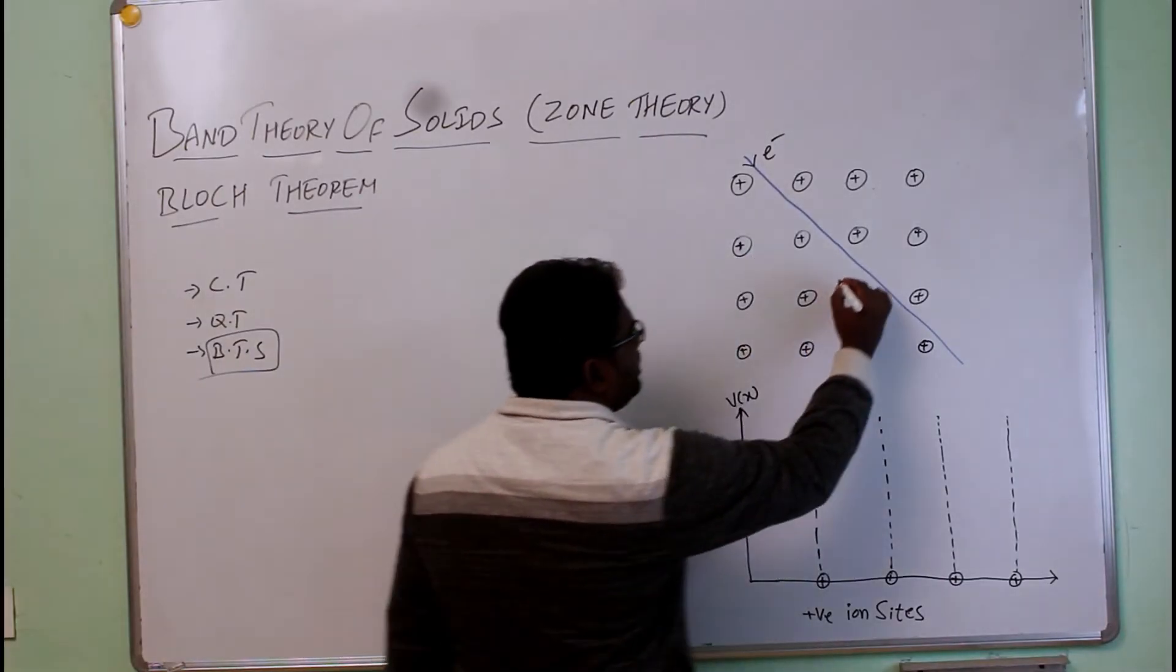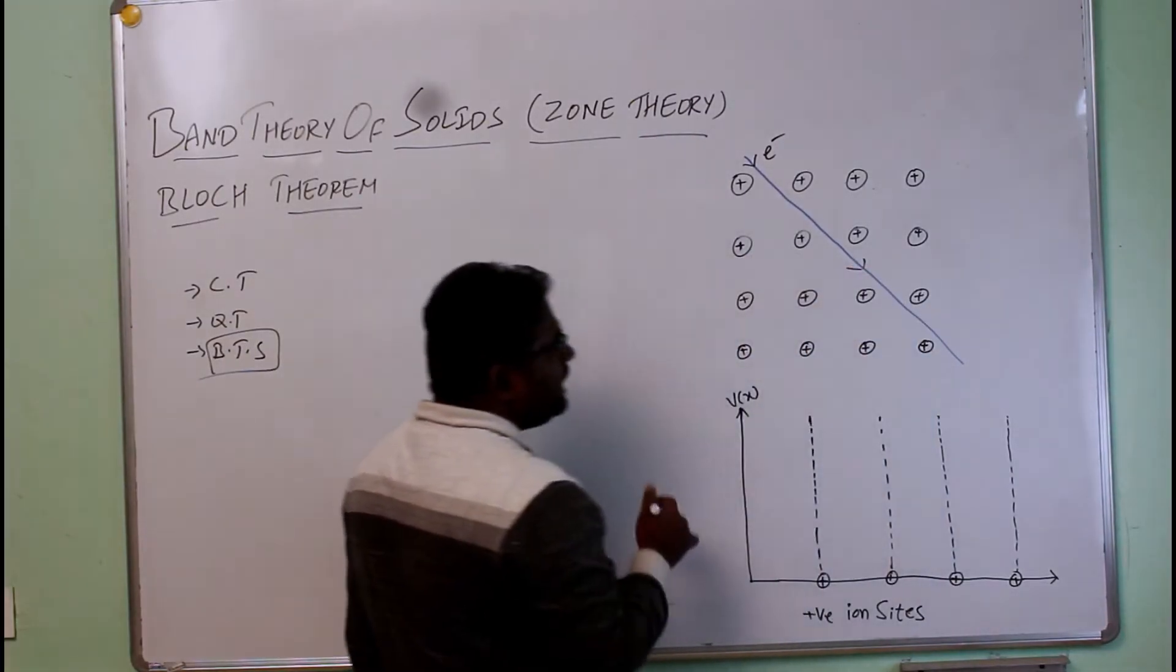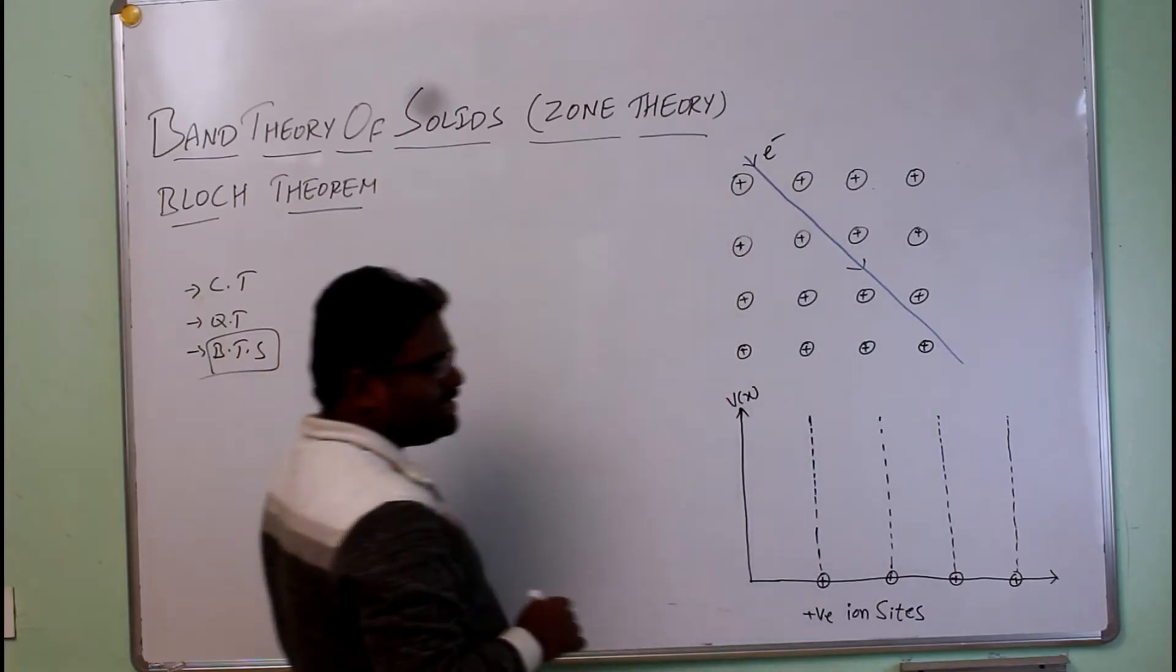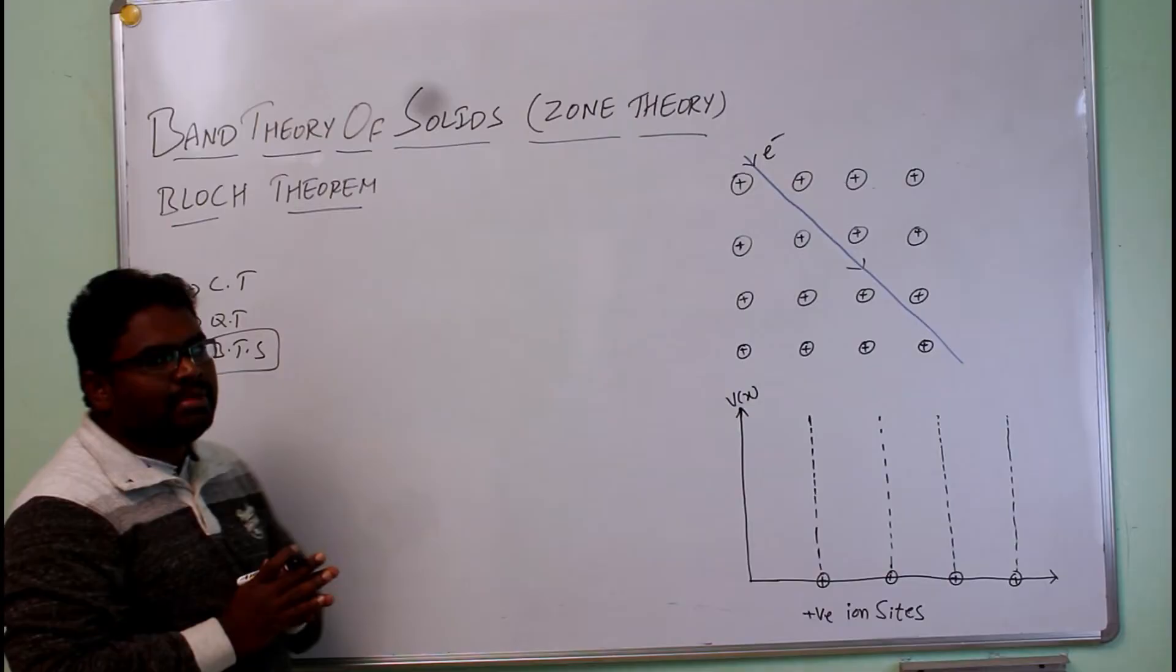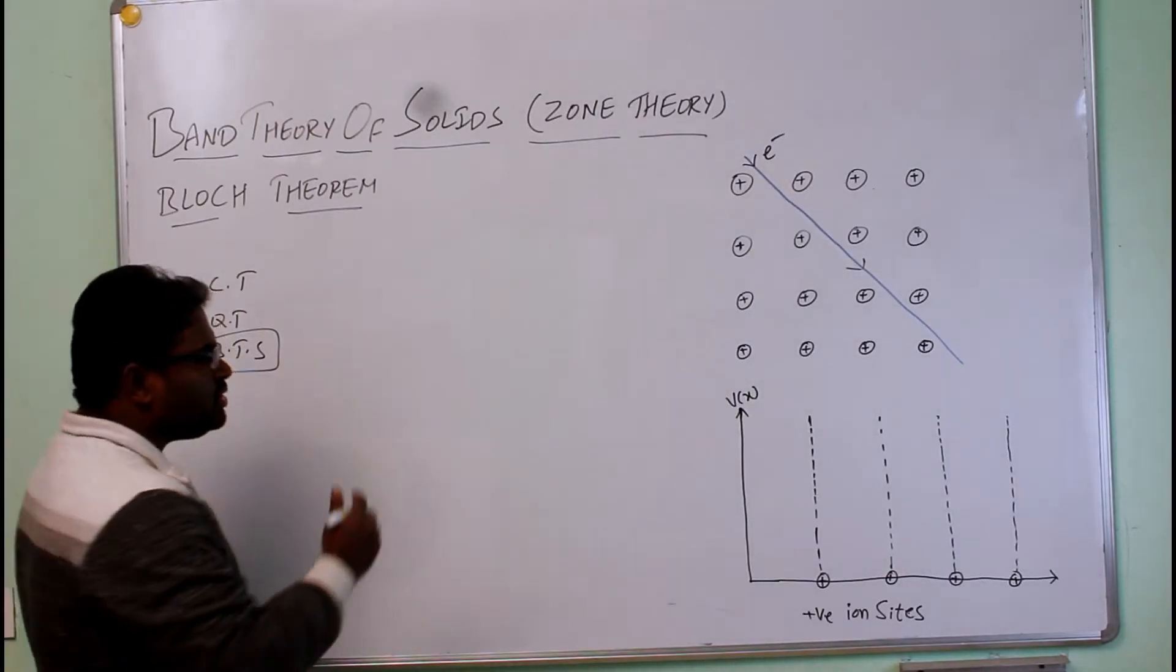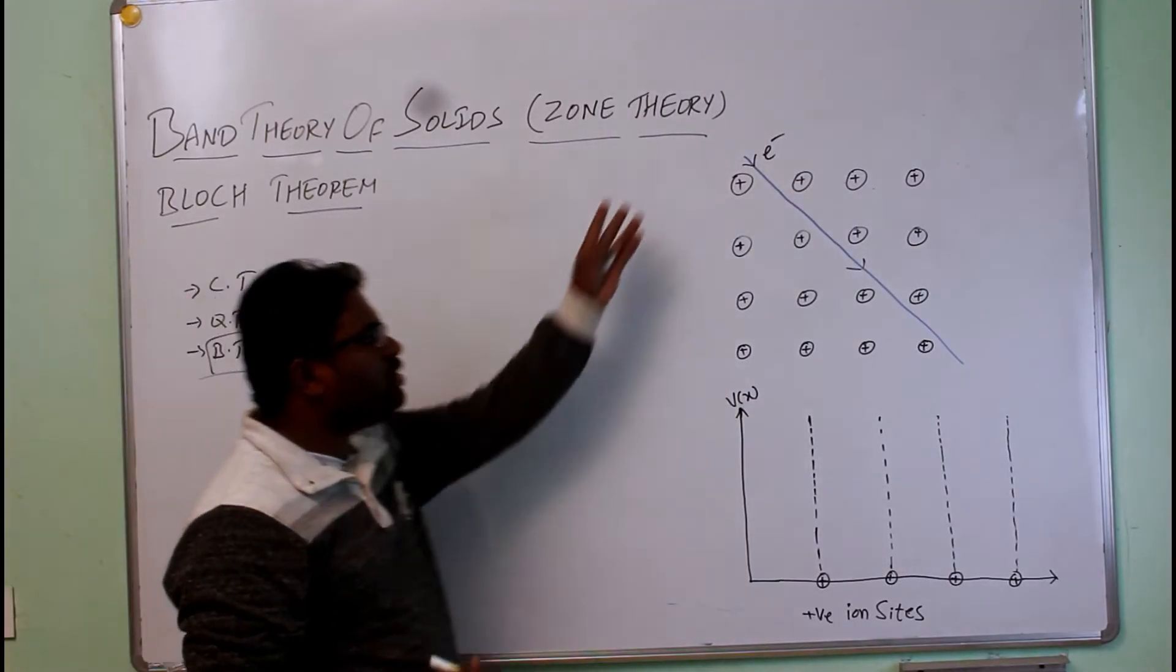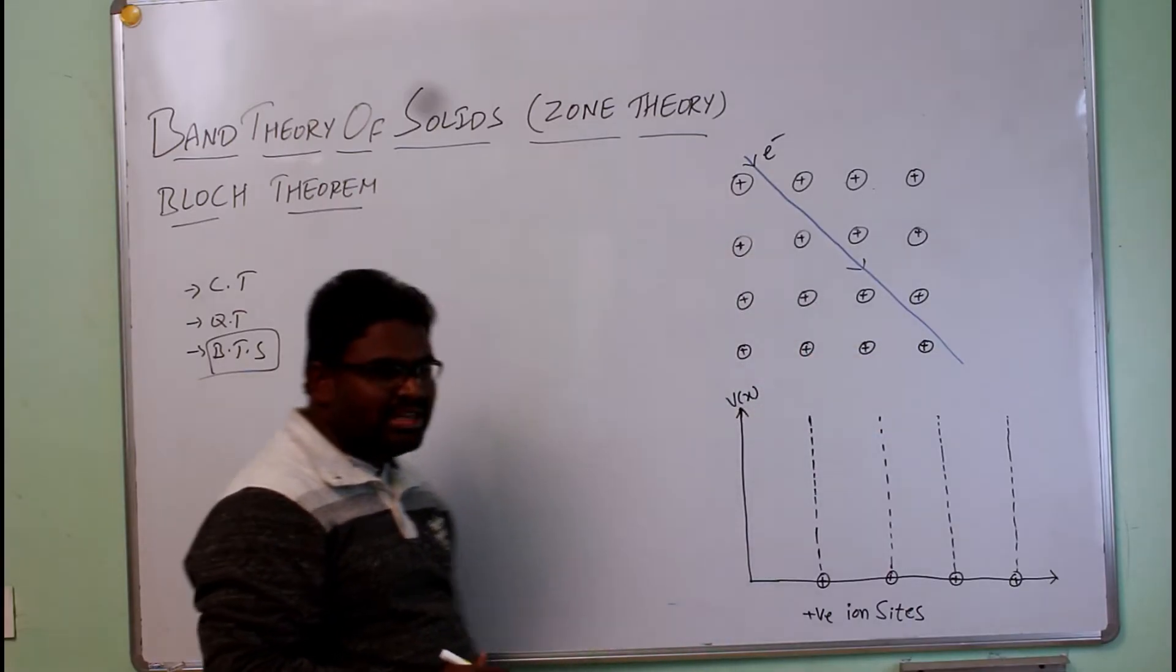Since electrons are obeying the quantum mechanics rules, it is moving like waves through the lattice points. The appropriate equation, the mathematical equation is nothing but the Schrodinger equation. The Schrodinger equation of that particular electron which is passing through the lattice points is given by: